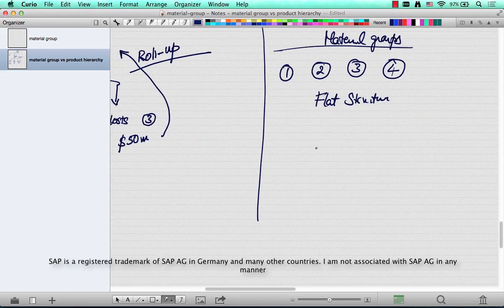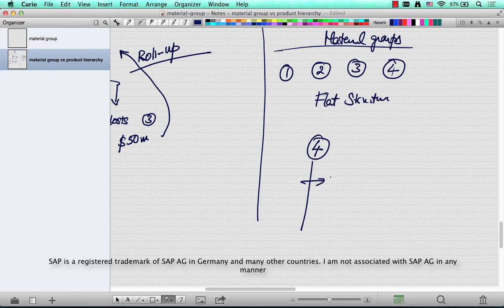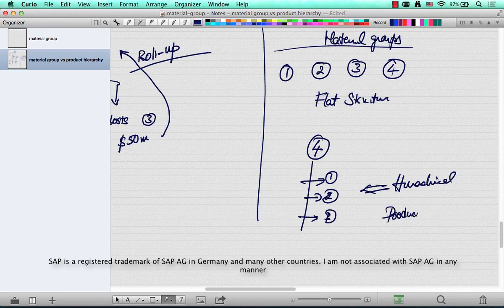A hierarchical structure, on the other hand, looks like this: clothing has designer, sports, and regular wear. This is hierarchical. This is how product hierarchy is structured.